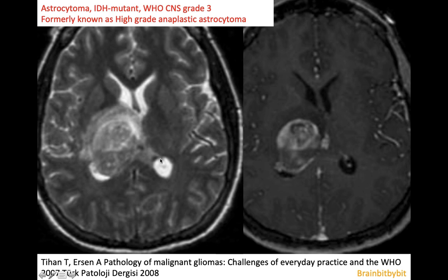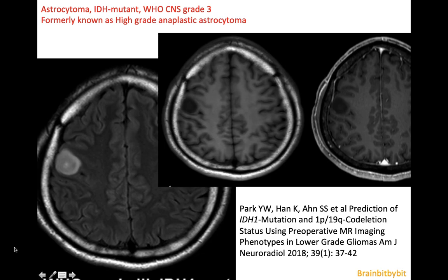If the lesion would be infiltrative with little mass effect and enhancing, I would prefer an anaplastic or high-grade astrocytoma. In case of necrosis, I would suggest GBM, which we will discuss in the next vlog. By calling enhancing lesions high-grade and non-enhancing lesions low-grade astrocytomas, we were correct in the majority of cases, but occasionally a lesion without enhancement turned out to be a high-grade astrocytoma on histology.